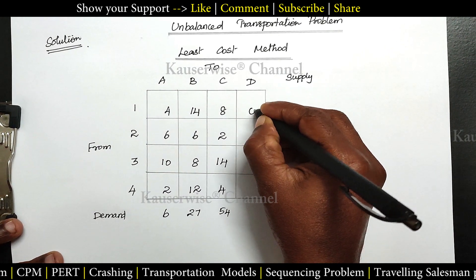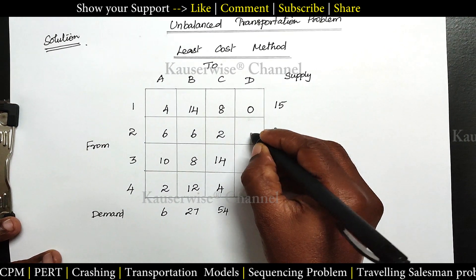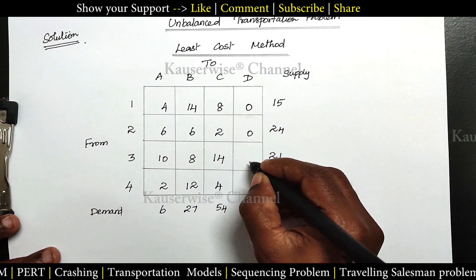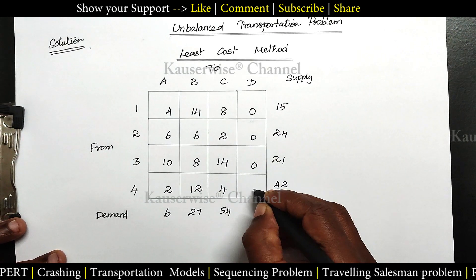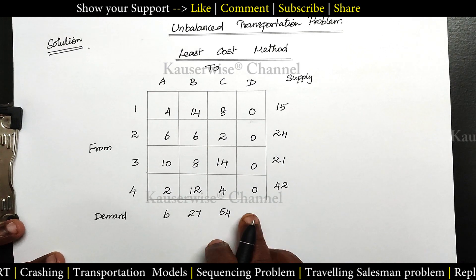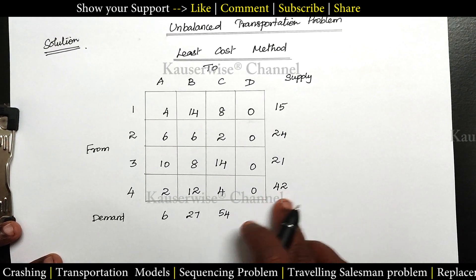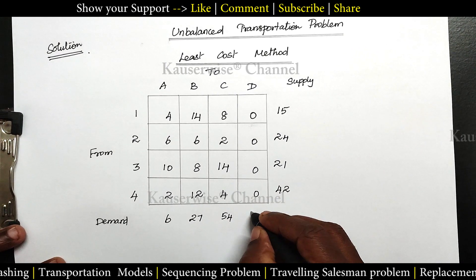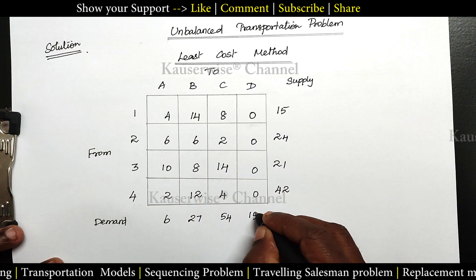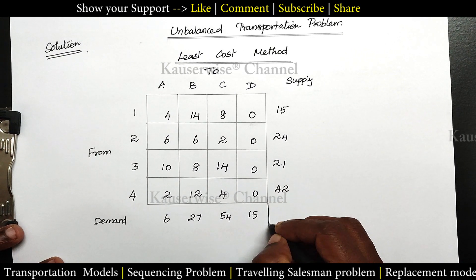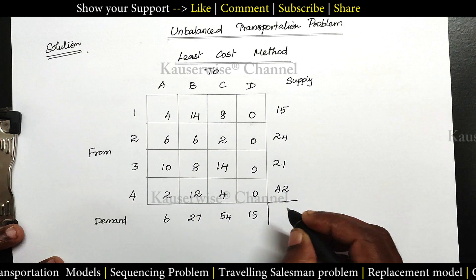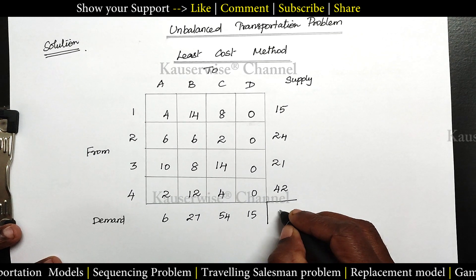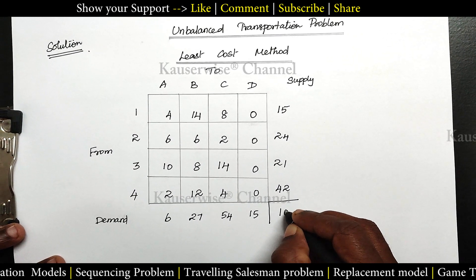The dummy column cost is 0, 0, 0, 0, 0 and the demand is 15 — the difference between supply and demand. Now this problem is balanced. The total is now 102.